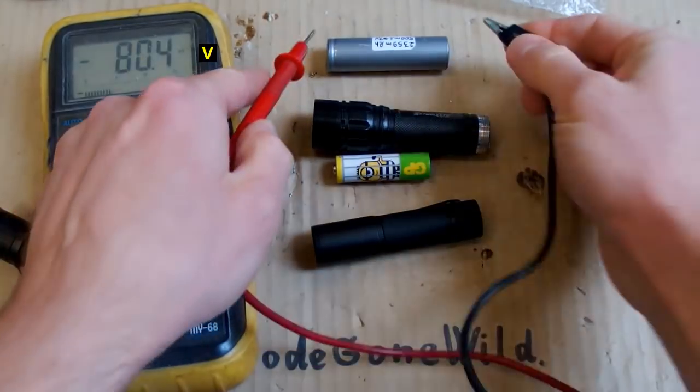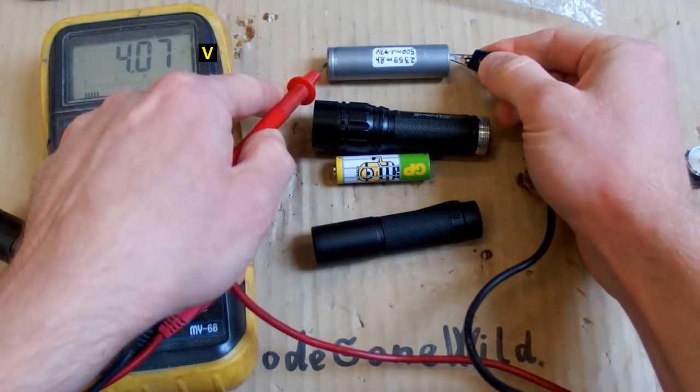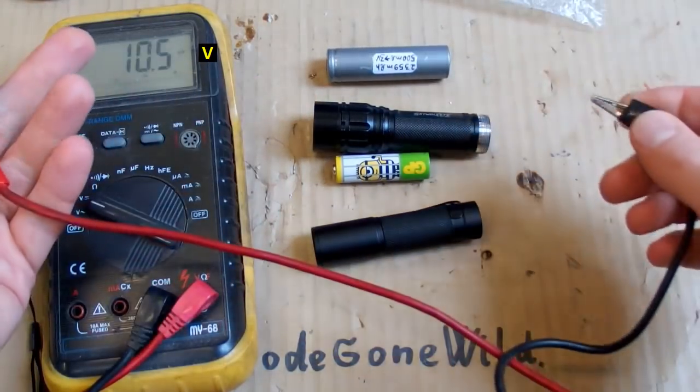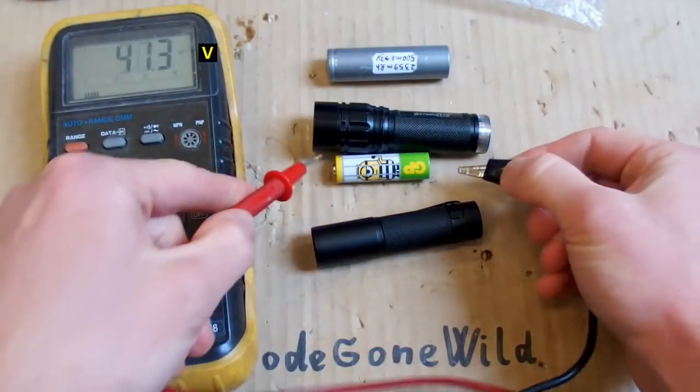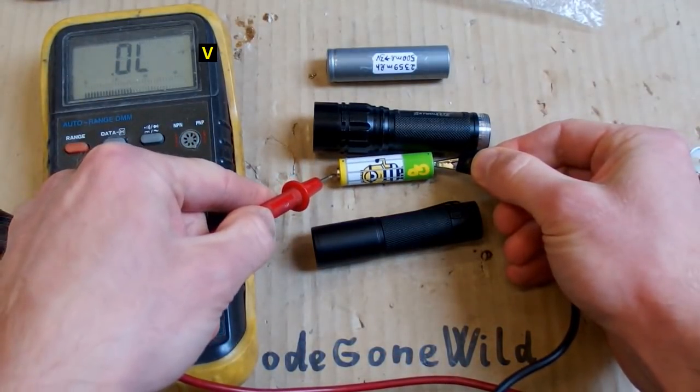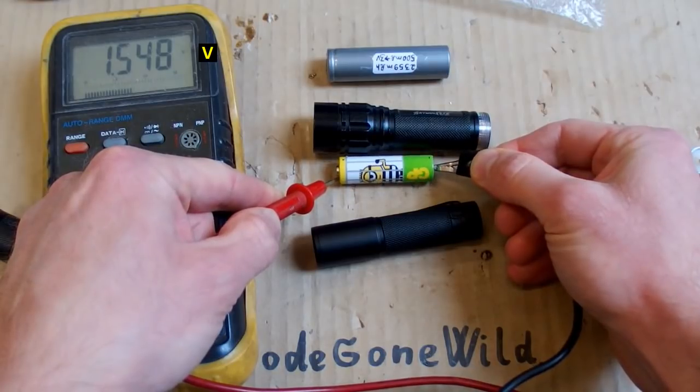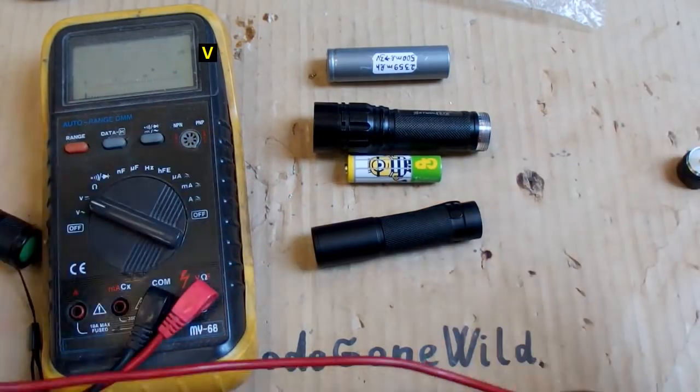Let's check the batteries. My 18650 battery is 4.06 volts, which is about 80 or 90% charge. And this AA battery is 1.55 volts, which is also almost new alkaline battery.